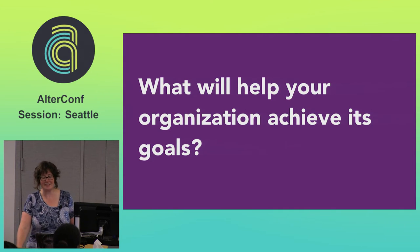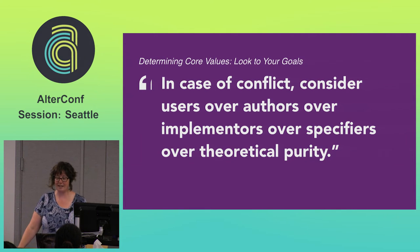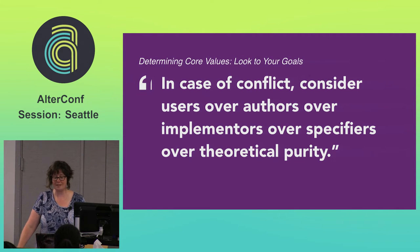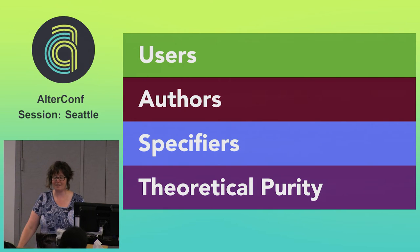The next question you might ask as you establish your core values is: what will help your organization achieve its goals? One of our inspirations has been the World Wide Web Consortium's priority of constituencies. Looking at that priority of constituencies was part of how we started talking about our core values — who comes out on top when there's a conflict? In an organization with many different stakeholders with conflicting goals, they need something like this to give structure to decision making. Because they put end users ahead of everything, we can guess at a value of utility standing behind that system.